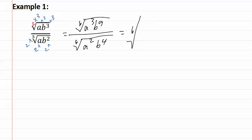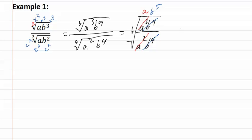Now that these roots match, we can combine them into one large sixth root with the fraction inside. We can reduce: a to the third over a to the second means we have one a left on top. b to the ninth and b to the fourth reduces, and all four b's on the bottom are gone with five b's on top. This means we have the sixth root of a·b to the fifth, which cannot be simplified any further.